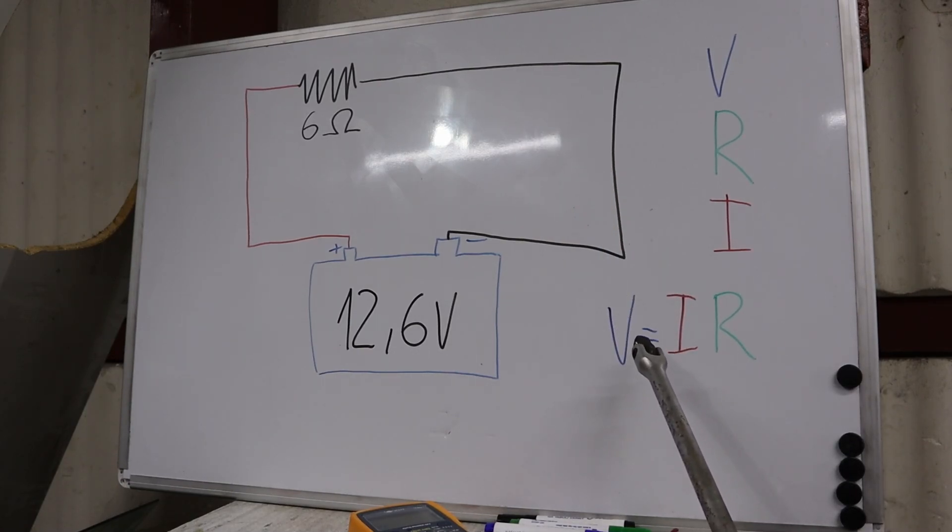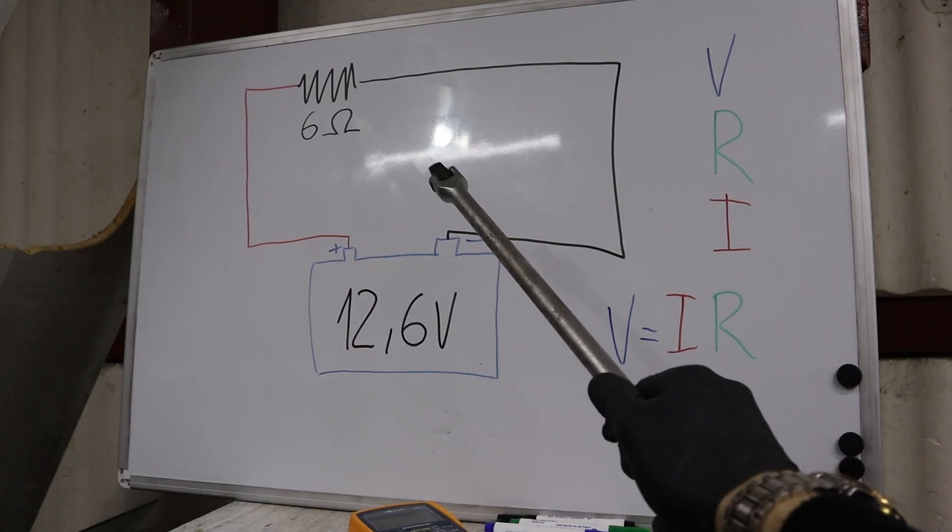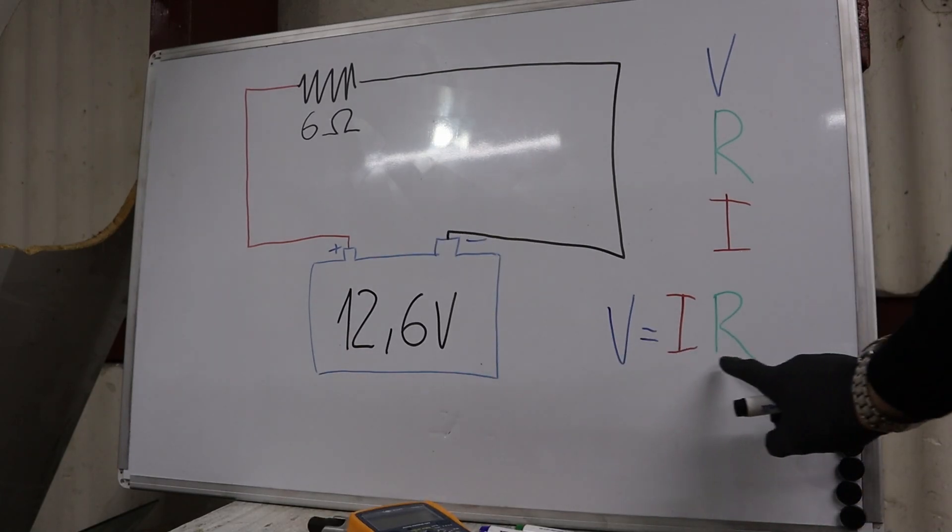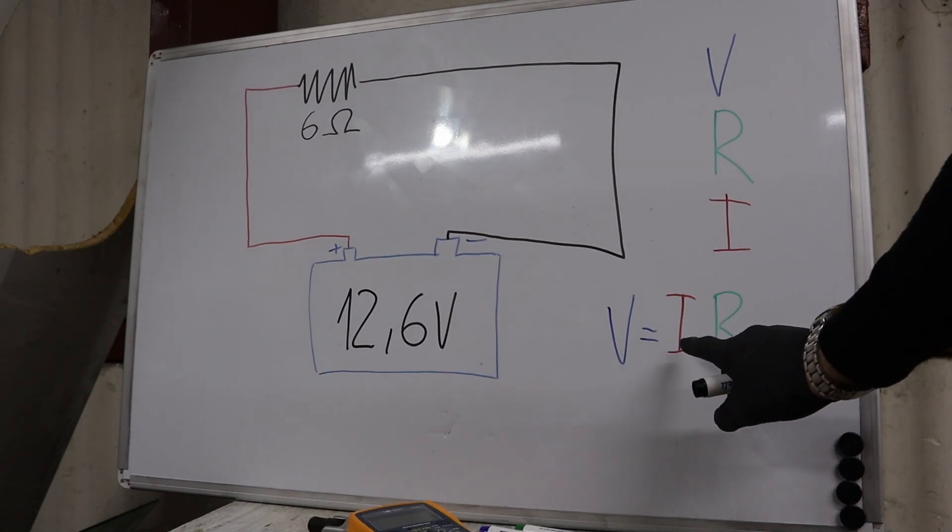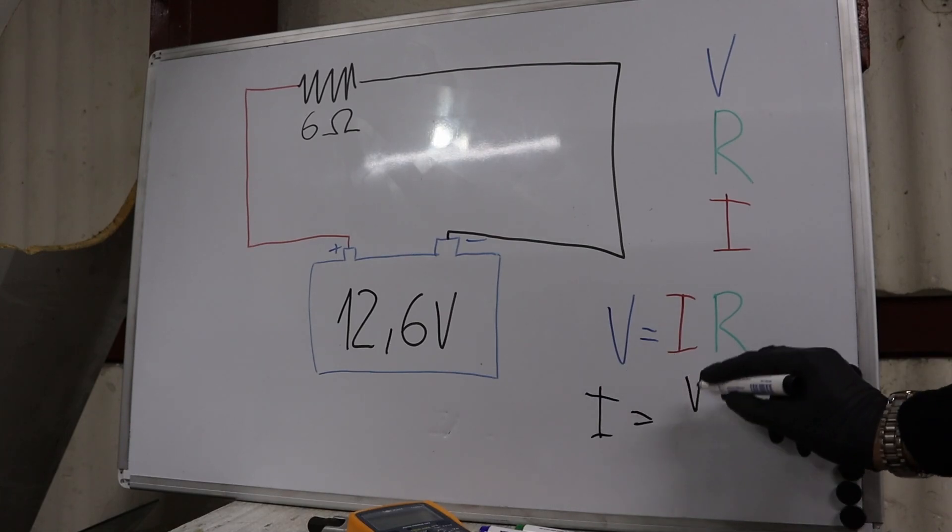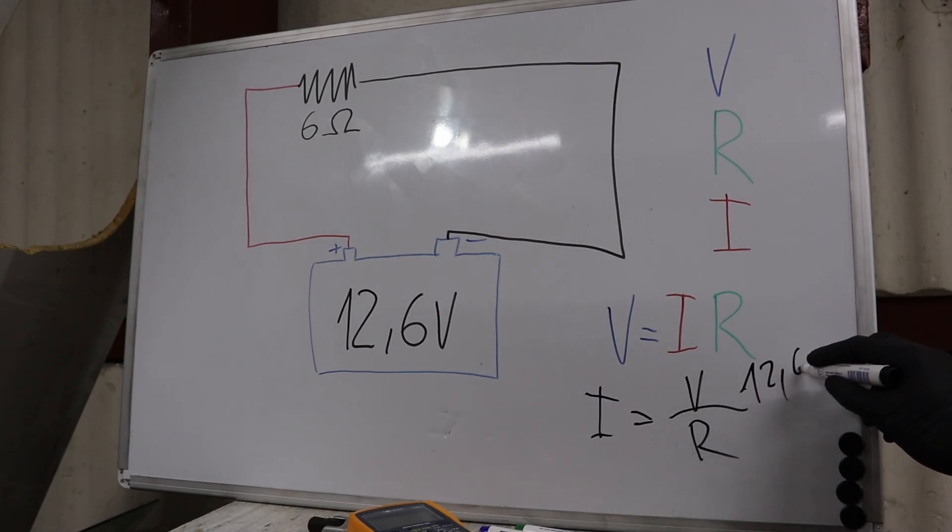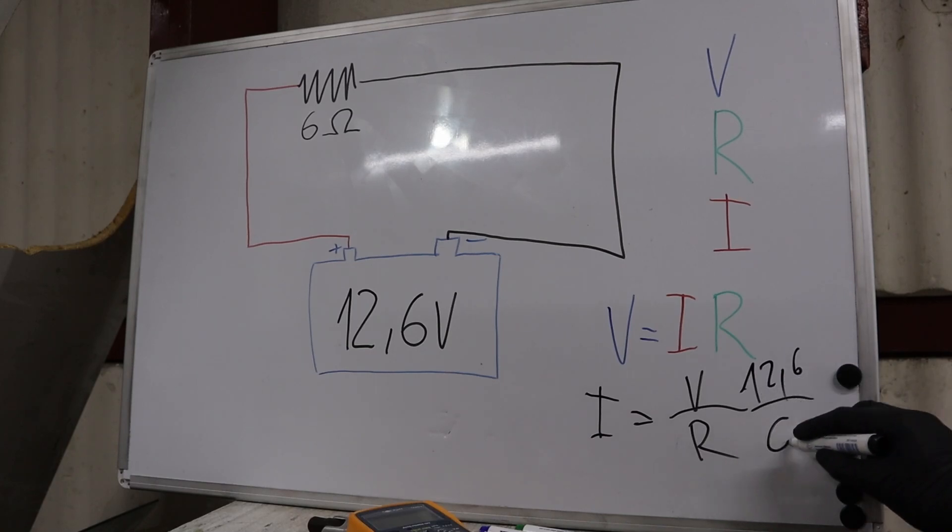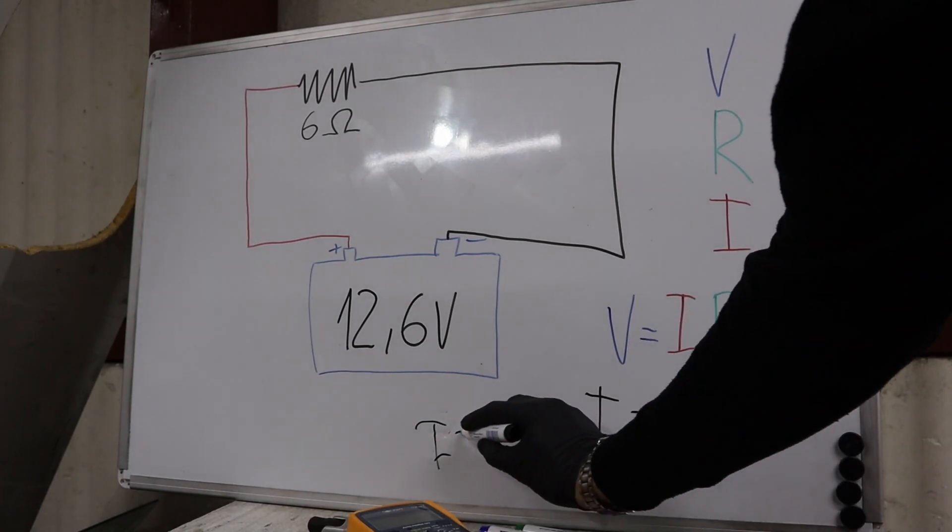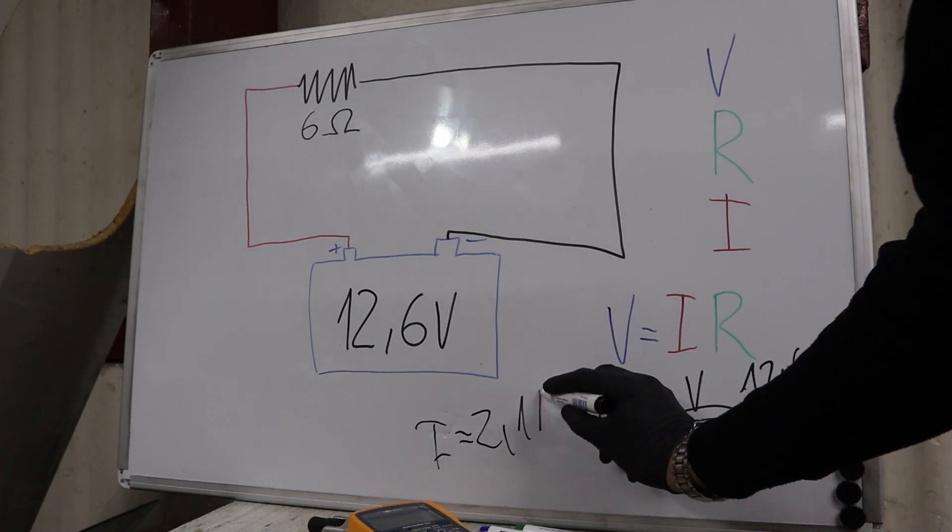For example, we have voltage 12.6V and we know our resistance is 6 ohms. We don't know our current, so our current will be voltage divided by resistance, which is 12.6 divided by 6. So our current will be 2.1 amps.